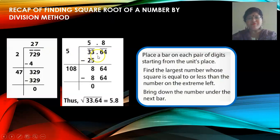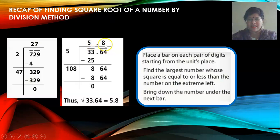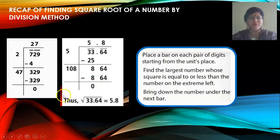Similarly, 33.64. 5.8 squared will give you the number 33.64. Here the remainder is 0, and here also the remainder is 0.